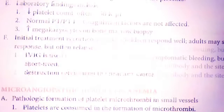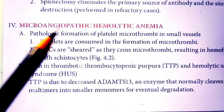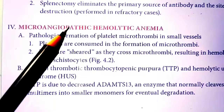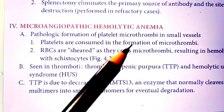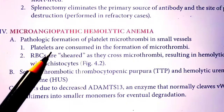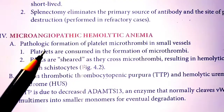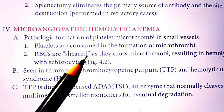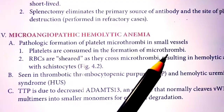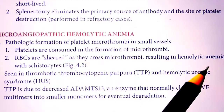Next is microangiopathic hemolytic anemia. Micro means small, angio means vessel, so small blood vessels are involved. Hemolysis — destruction of RBCs — occurs because platelets are consumed in the formation of micro-thrombi in small blood vessels, and RBCs are sheared as they try to cross these micro-thrombi.